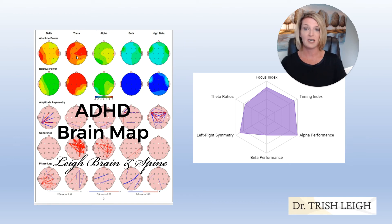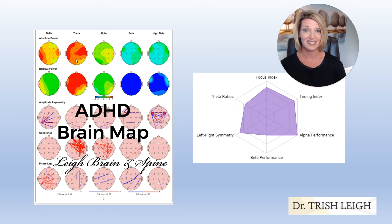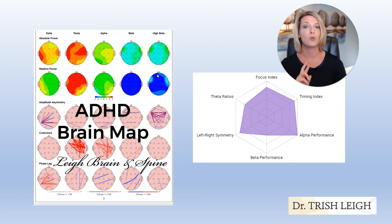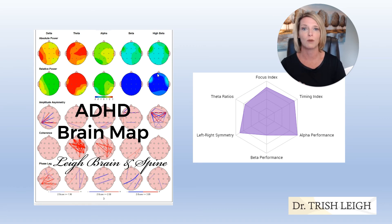We see hyperactivity manifesting in physical behaviors, but I also have a video on the anxiety brain map. This slowing can be offset by mental hyperactivity — worry or excessive thinking — which shows up as excessive beta and high beta, appearing red on the map. Scientifically, this pattern exists together with ADHD more times than not. It's called comorbid — the two patterns, ADHD and anxiety, exist together.